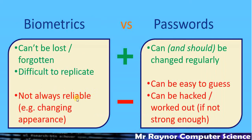The benefits of biometrics: unlike a password, you can't forget it — your fingerprints are always with you — and it's difficult, though not impossible, for others to replicate. There are rare cases of people in the world with the same fingerprint, but it's very unusual and generally thought of as unique. It's hard for somebody to reproduce your fingerprint, but not entirely impossible.